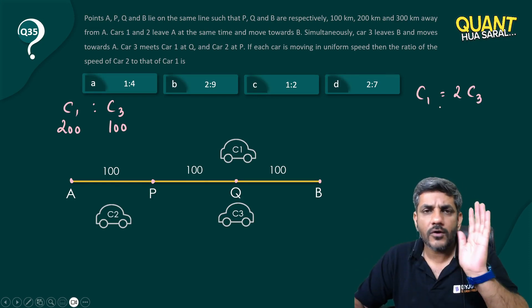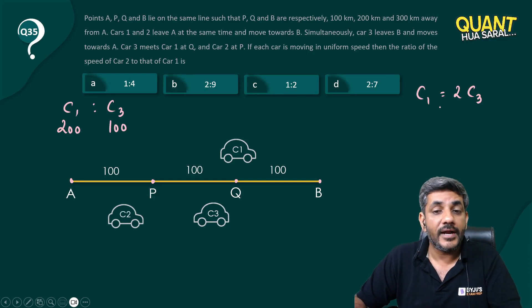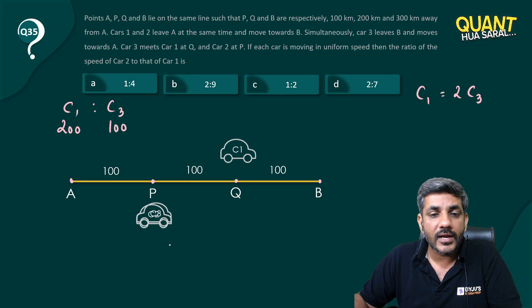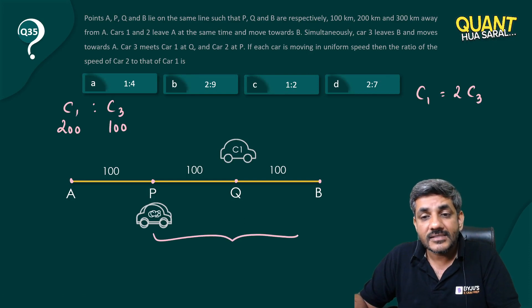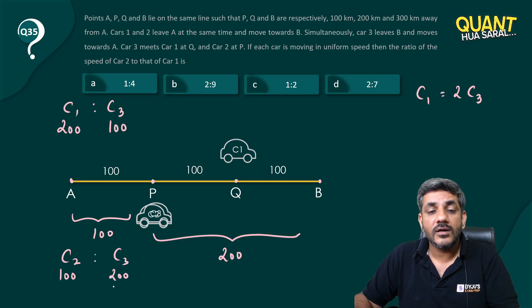They further keep moving. Let's forget about C1 now, but C2 and C3 have to meet at point P. When C2 and C3 meet at point P, C3 has covered 200 but C2 has covered only 100. So C2 covered 100 in the same time C3 covered 200, or speed of C3 is twice of C2.